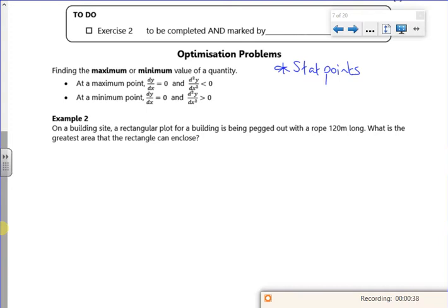Right, so it says on a building site a rectangular plot is being pegged out with a rope 120 meters long. So that's telling you straight away that my perimeter is 120. What is the greatest area? So you've got to think about I can change the dimensions and I want to see which one the best one is. So at school you'd have tried different values of x and y to come up with the biggest value of the area whilst maintaining a perimeter of 120. So that's our little picture, x across and y up.